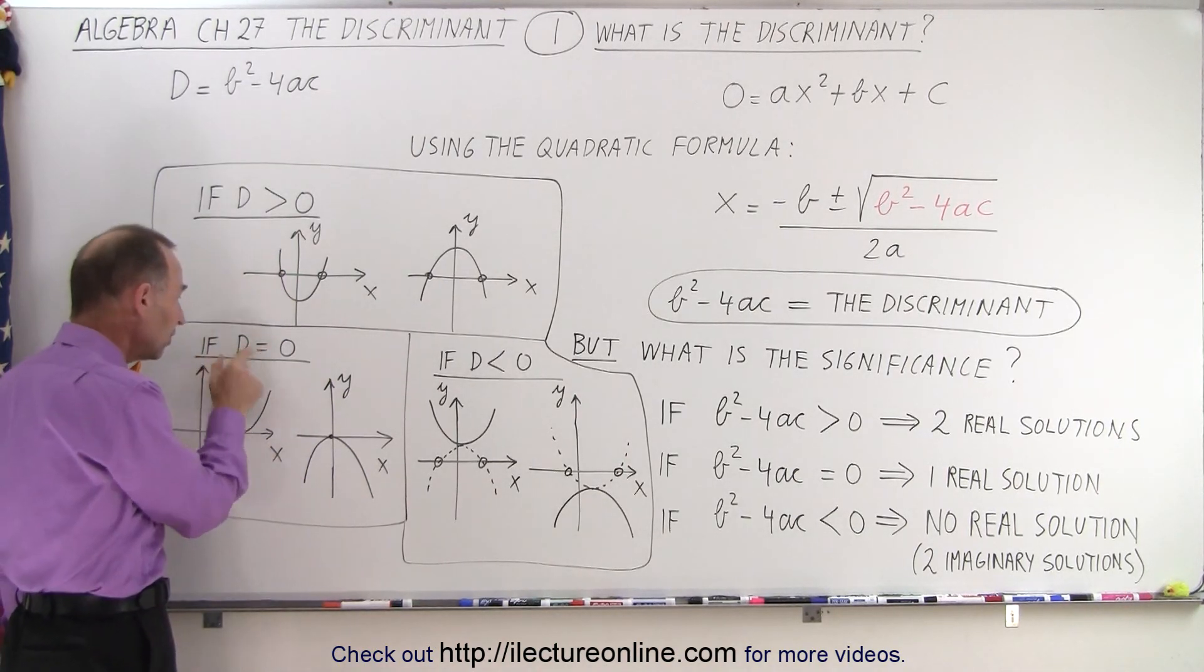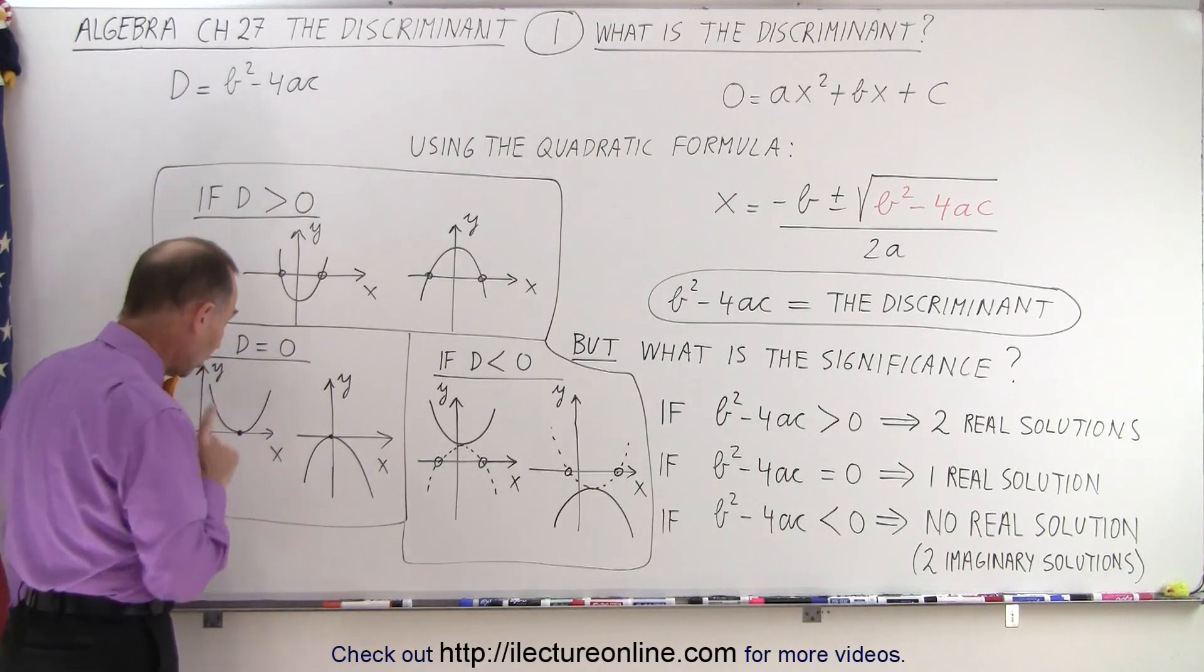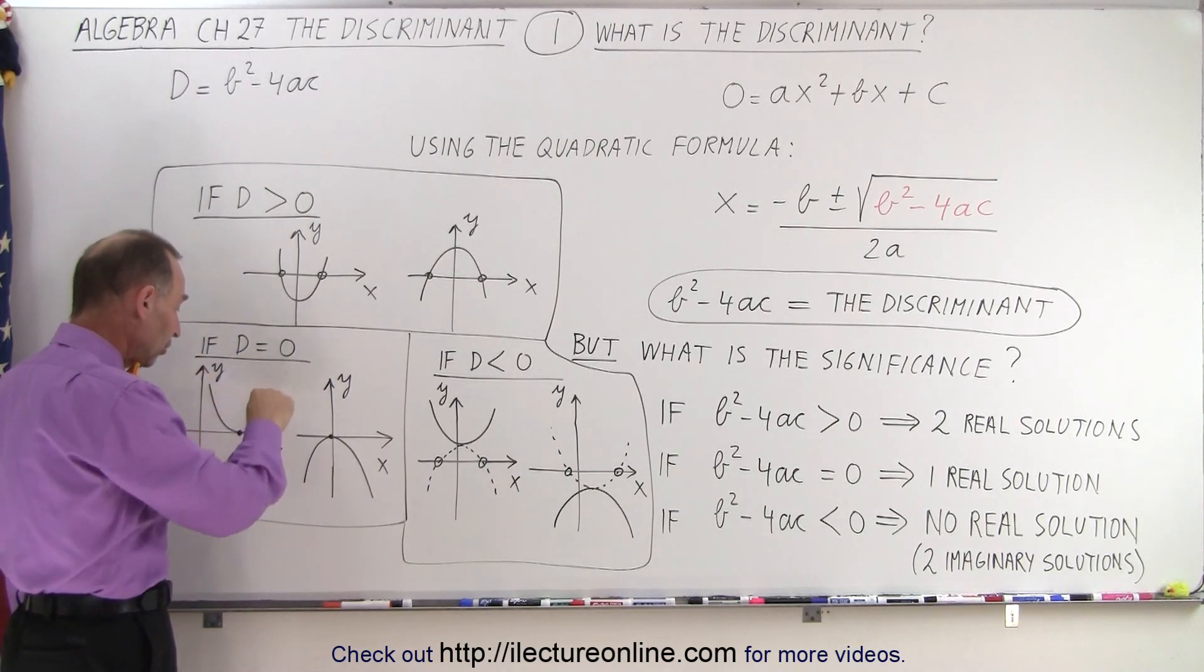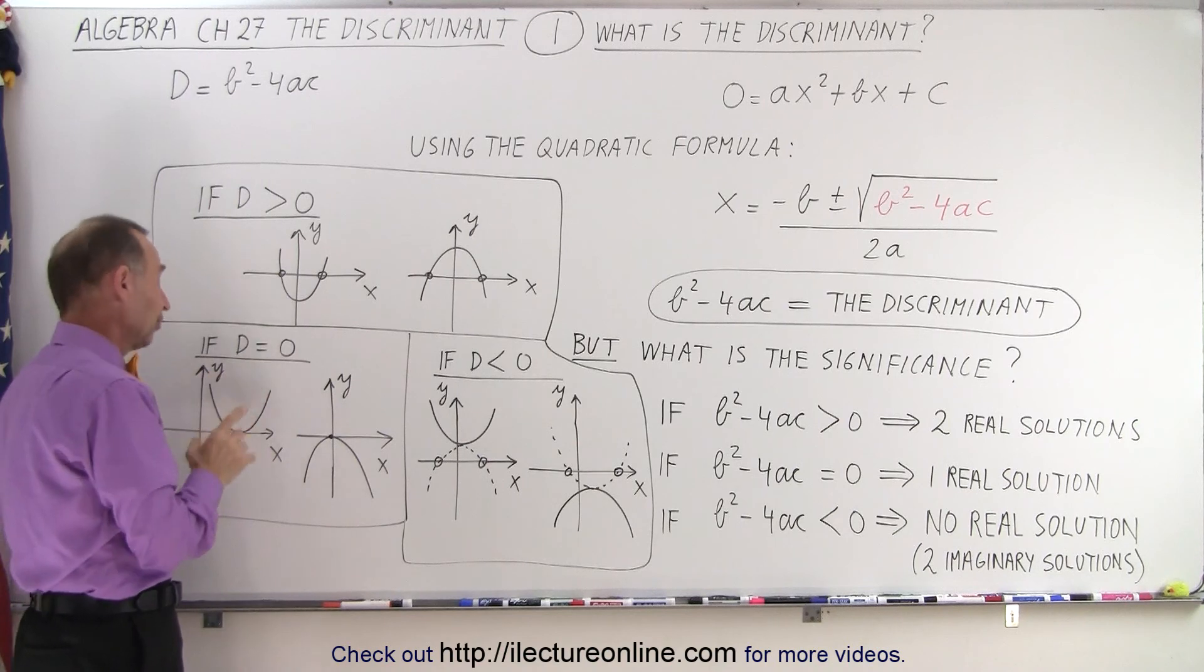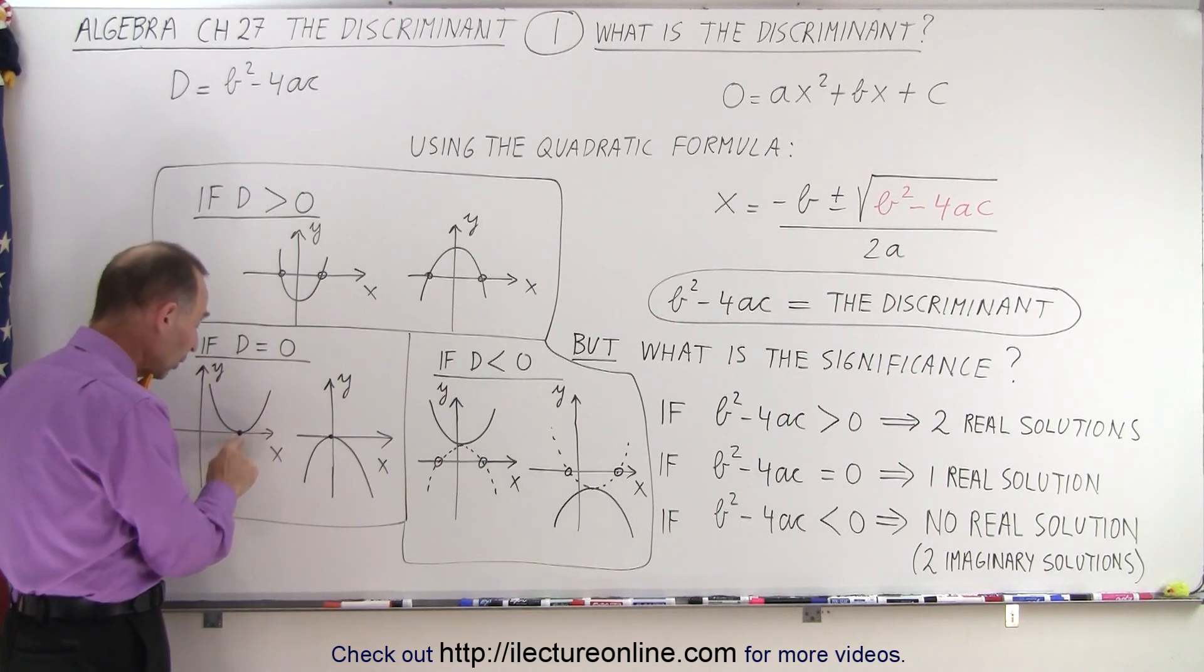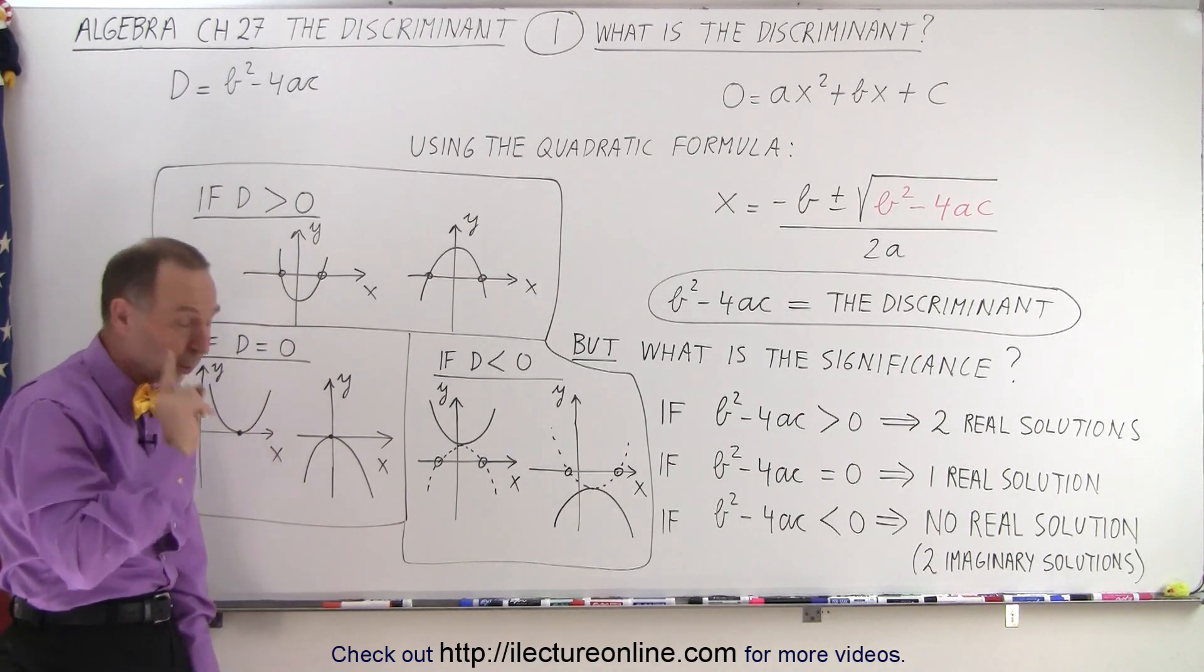If the discriminant is exactly equal to zero, then there's only one solution, which means the quadratic equation or the graph I should say will look like this where it touches the x-axis in only one point.